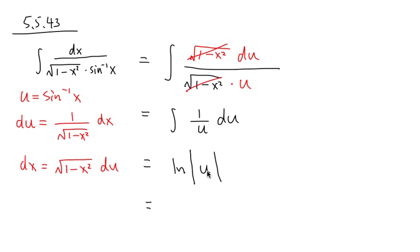And finally, we'll just write u back. u is equal to inverse sine x. So the final answer will be ln with an absolute value, inverse sine x, and we have the plus C at the end.